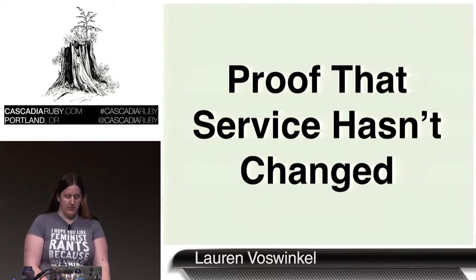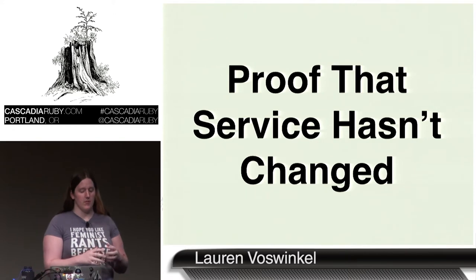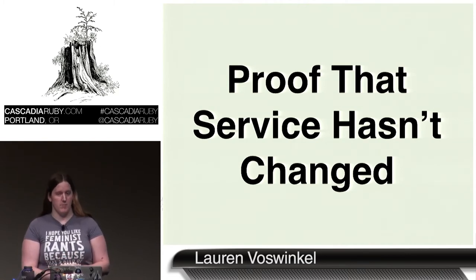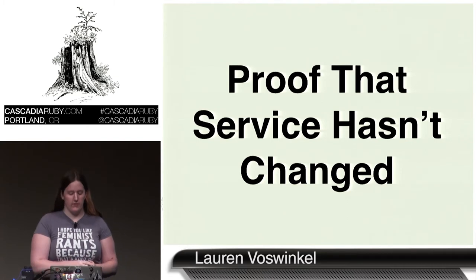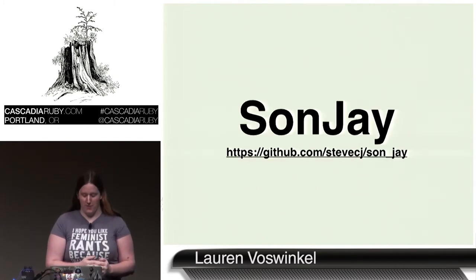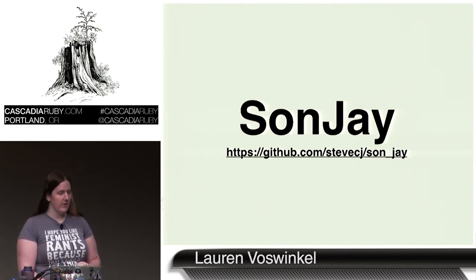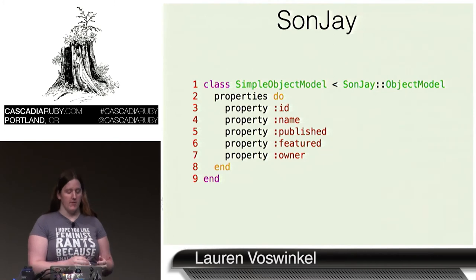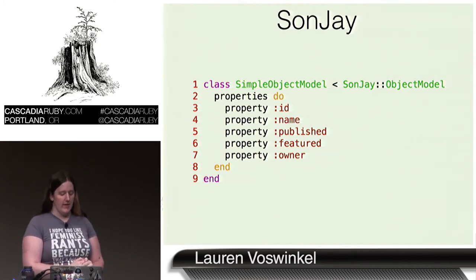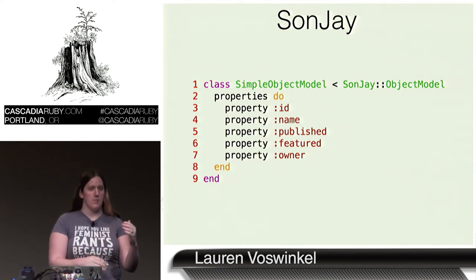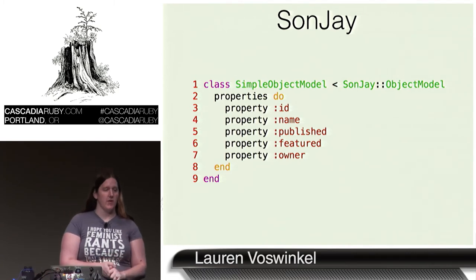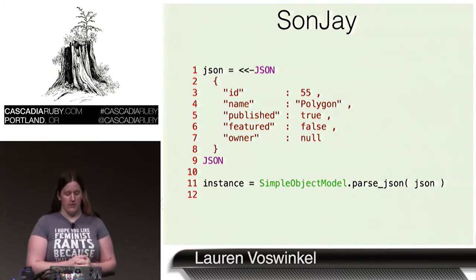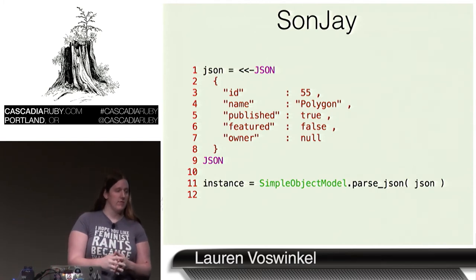There is a gem that kind of encapsulates both creating the controllers with responses and creating the client models that are being consumed, and that is a gem called Sanjay. It is very similar to active model serializers in that when you're creating an object model, you basically just give a list of properties you want to encode, and that will create a parser that can take JSON and turn it into one of these objects — so that when you get JSON back from your service, you run the model parser and it creates an instance of that object for you.